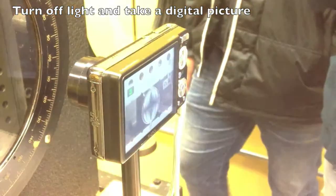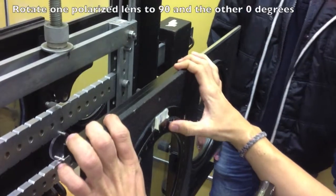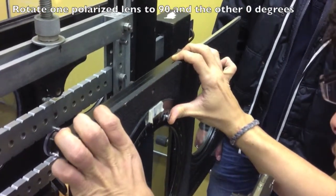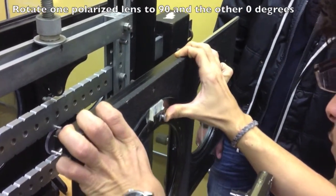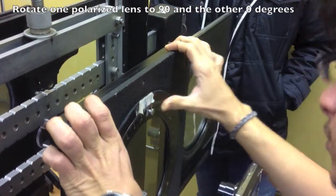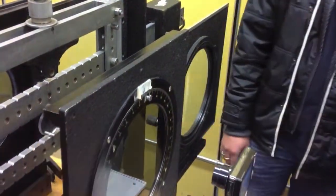Turn off the light and take a digital picture. Rotate one polarized lens to 90 degrees and the other to 0 degrees. Turn off the light and take a digital picture.